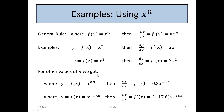For other values of n, we use exactly the same approach. For example, if y equals f(x) equals x to the 0.3, then the derivative would be: we take down the 0.3 as a multiplier, x, and 0.3 minus 1 is minus 0.7. Similarly, in the case of y equals x to the minus 17.6, dy/dx would be minus 17.6 as a multiplier, x to the minus 18.6 — one less than minus 17.6.